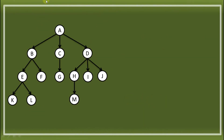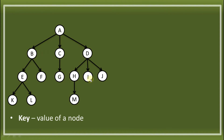Now let's identify the terminologies for our TREE. The first term is KEY. KEY represents the values of a node. The KEYs here are the letters found inside the circles — A, B, C, D, and so on. Those are the KEYs, which represent the value of each node.